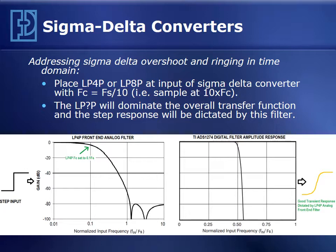One thing we can do to address the poor transient response of a sigma-delta converter is to use a higher-order front-end analog filter, such as one of PFI's pulse mode filters — the LP4P or the LP8P. We can set the cutoff frequency to be equal to the sampling frequency divided by 10, or in other words, sample at 10 times the cutoff frequency. When we do this, the transfer function of the front-end analog filter dominates the overall system transfer function, and the step response is dictated by the filter.